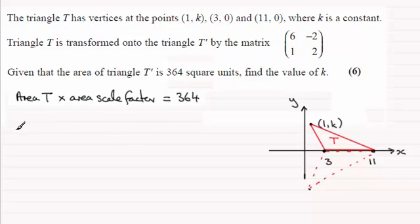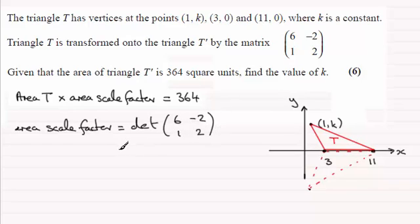Well, that area scale factor is equal to the determinant of that matrix. Let's just write det of (6, -2; 1, 2). And if you work out that determinant in the usual way: 6 times 2 which is 12, and then you would subtract the product here, 1 times -2 which is -2, so you're going to have minus minus 2, so that's plus 2, and that comes to 14.